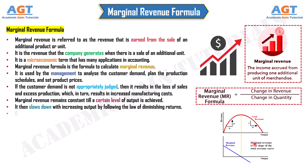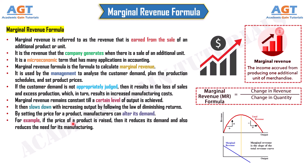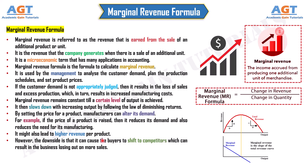By setting the price for a product, manufacturers can alter its demand. For example, if the price of a product is raised, then it reduces its demand and also reduces the need for its manufacturing. It might also lead to higher revenue per product. However, the downside is that it can cause buyers to shift to competitors, which can result in the business losing out on more sales.